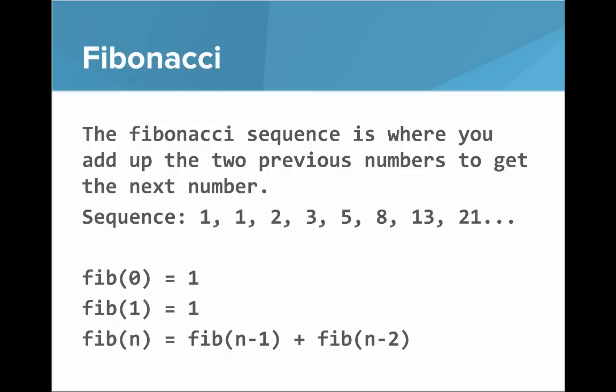Okay, so now let's look at the Fibonacci sequence. The Fibonacci sequence is where you add up the two previous numbers to get the next number. So the sequence looks like 1, 1, 2, 3, 5, 8, 13, 21, etc.